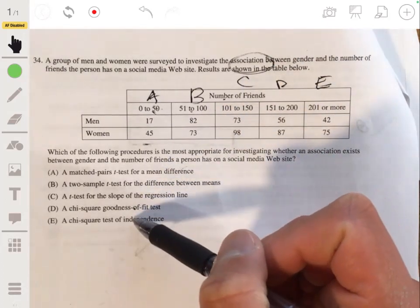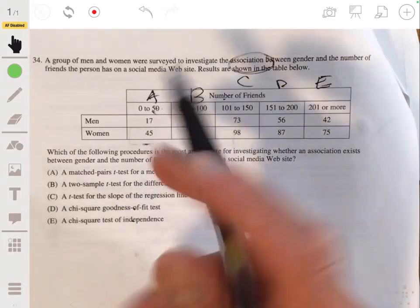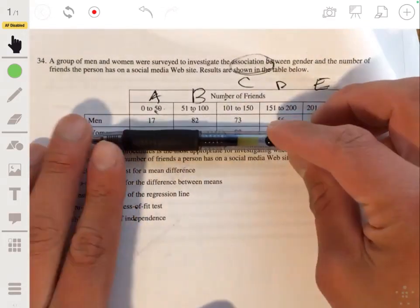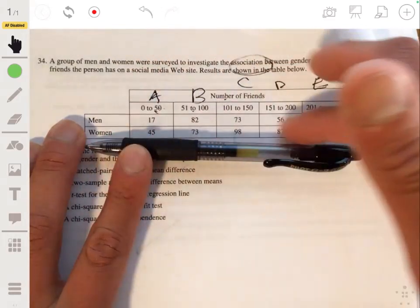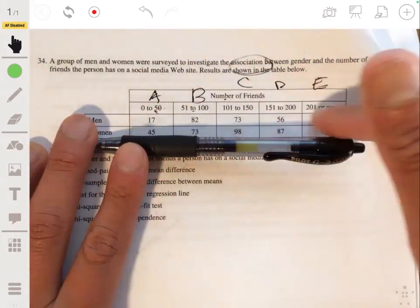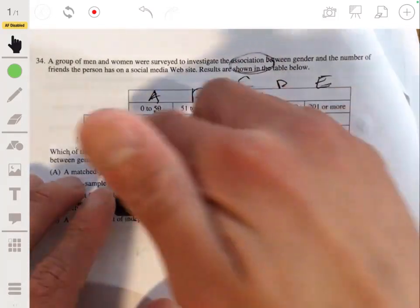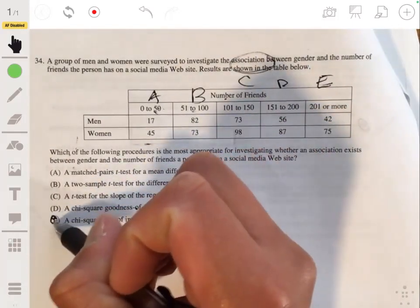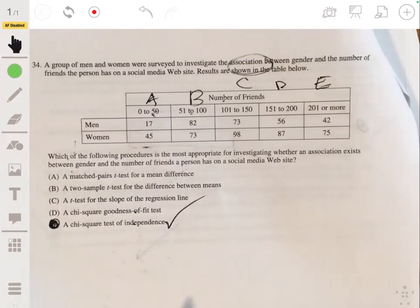Now, so it comes down to D or E, and it wouldn't be a chi-square test for goodness of fit because that would only be if you're testing the distribution of one variable across these number of friends for men. But since you have two across multiple groups, you have a chi-square test for independence. So your answer would be E.